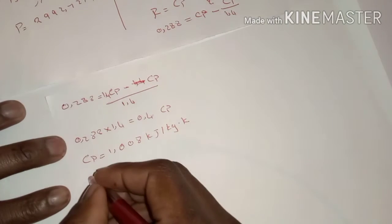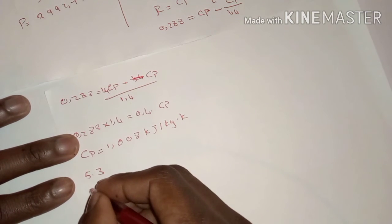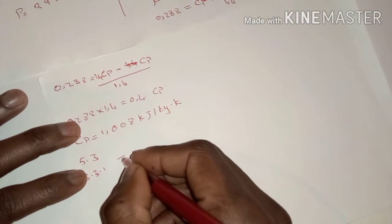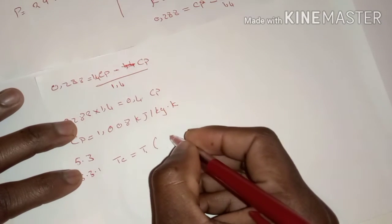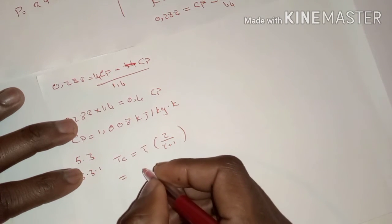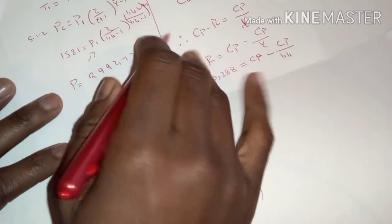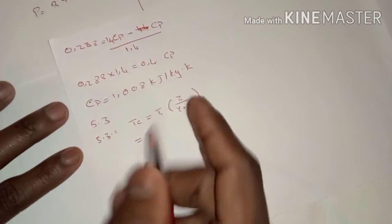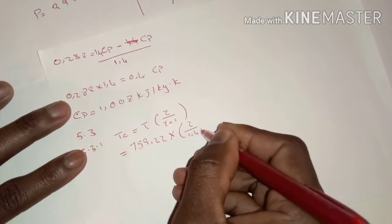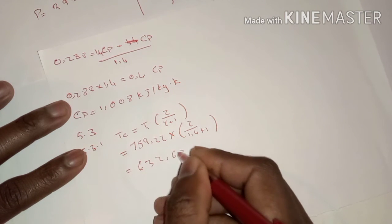Now for 5.3 at the throat of the nozzle. For 5.3.1, the absolute temperature at the throat: TC equals T1 times (2 divided by (gamma plus 1)). Substituting T1 equals 759.22 Kelvin and gamma equals 1.4, we get TC equals 759.22 times (2 divided by 2.4), which gives TC equals 632.683 Kelvin.